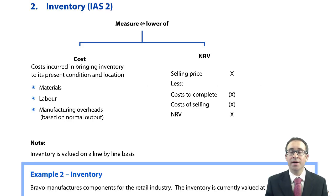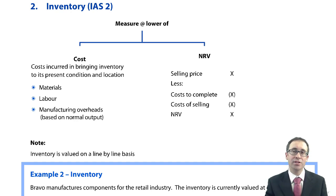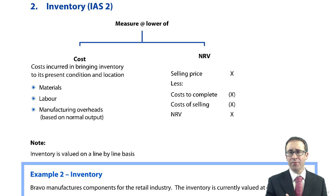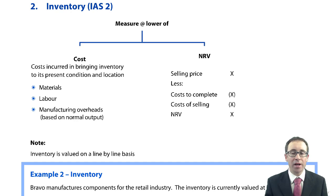The second part of the chapter, following on from agriculture, is now looking at inventory. Inventory is a massive bit of revision from the days of F3 and F7, so there isn't anything too new, but we are going to throw one slight little curveball in there as we go along.